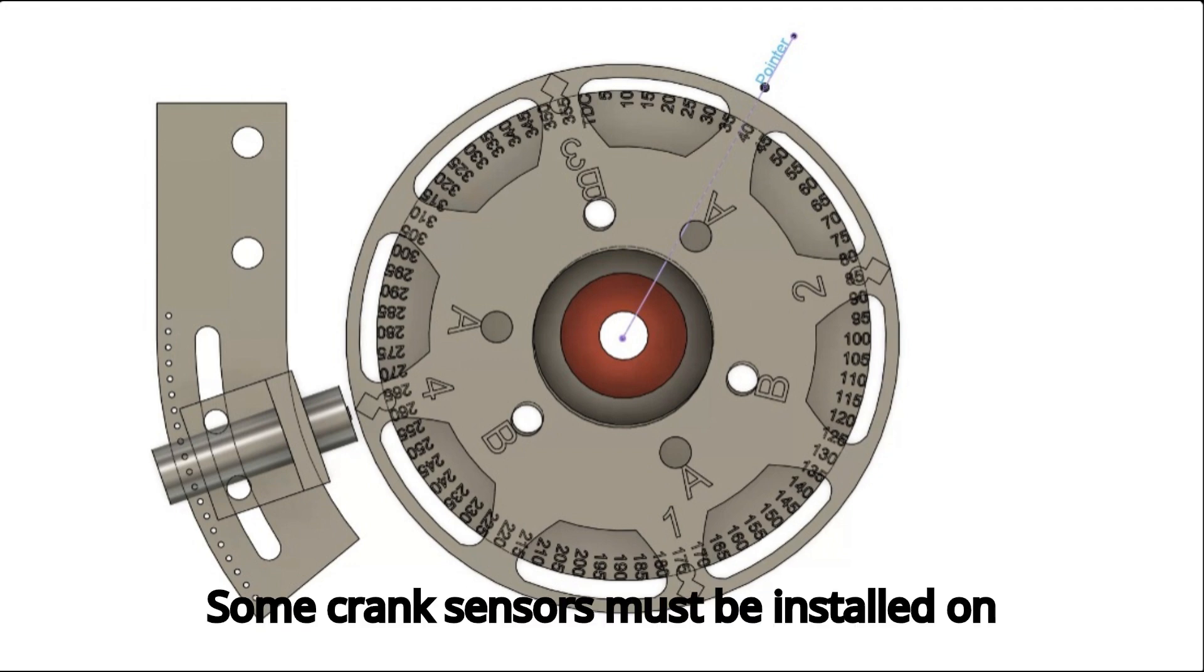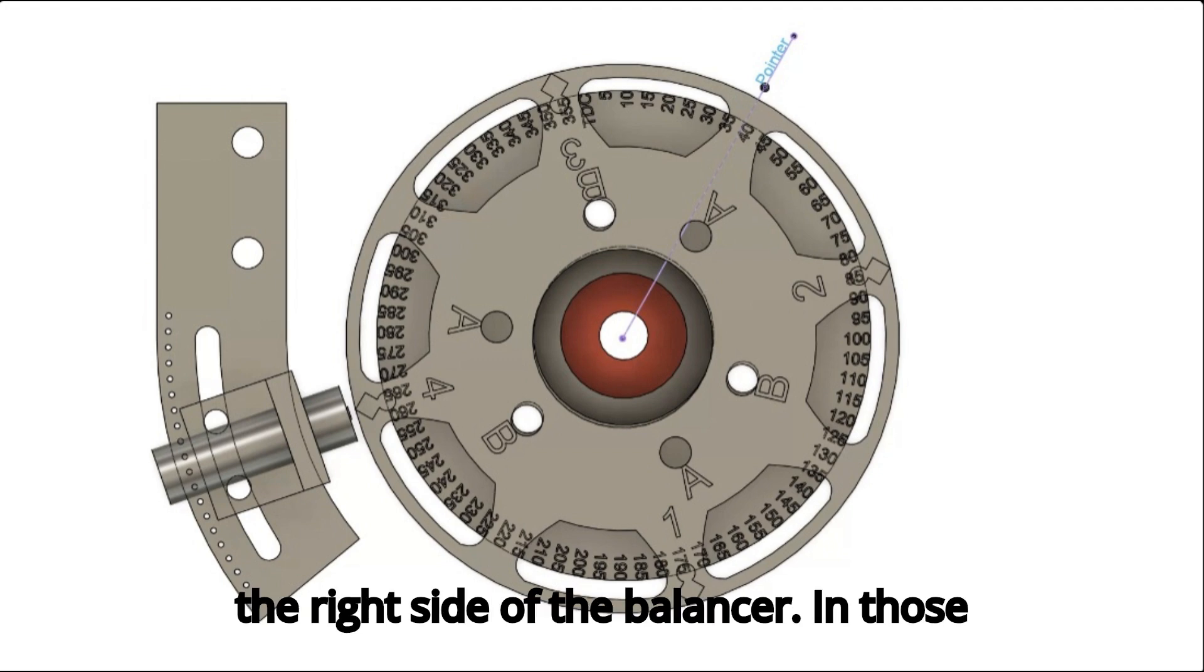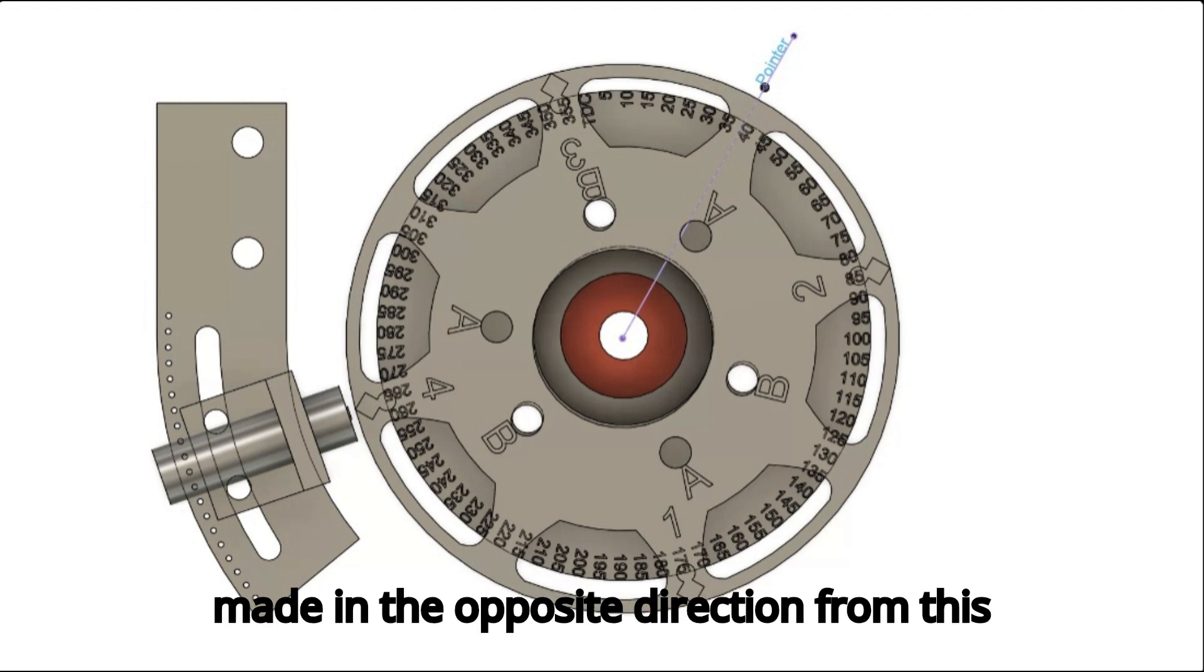Some crank sensors must be installed on the right side of the balancer. In those configurations, timing adjustments are made in the opposite direction from this demonstration.